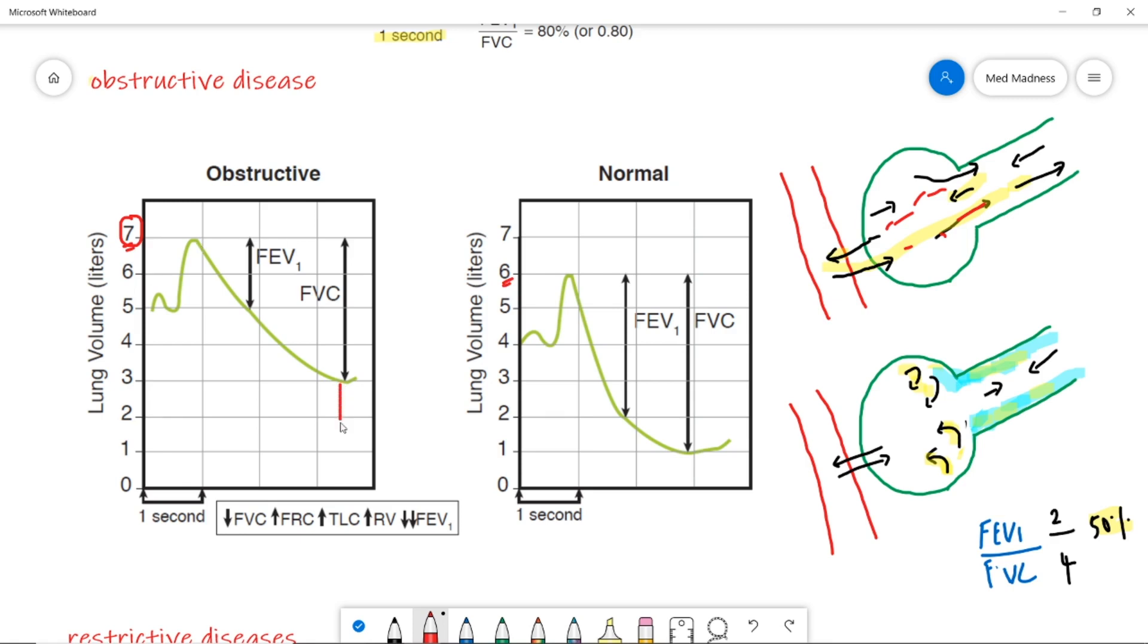Due to the air trap, you have increased residual volume here and also the FRC is also increased. What is FRC? Recall from the previous video. At this point, you expire normally, right? So, what is the amount of air present after a normal expiration? It is FRC.